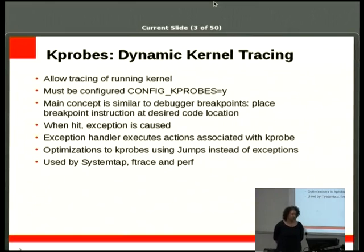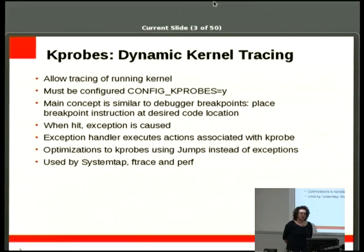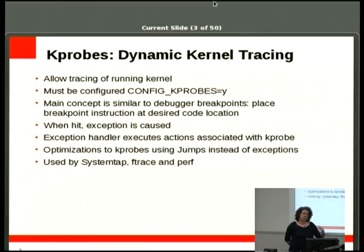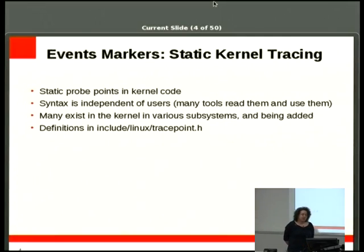Similar to debugger breakpoints, you insert a breakpoint instruction at a specific location, and when the exception is caused the handler executes the actions of your probe — usually collecting variables and calculations. There are optimizations that allow jumps instead of exceptions, so the path has been made as efficient as possible. These are used by SystemTap, ftrace, perf, and other tools.